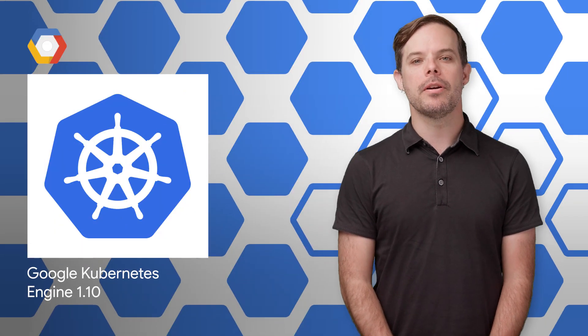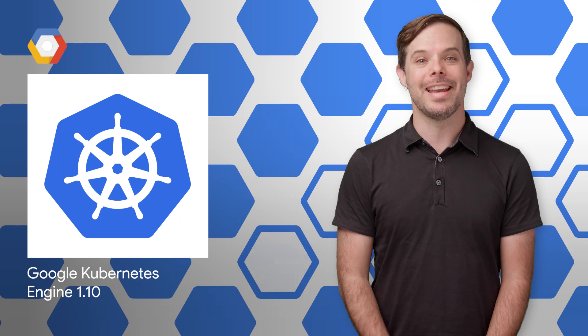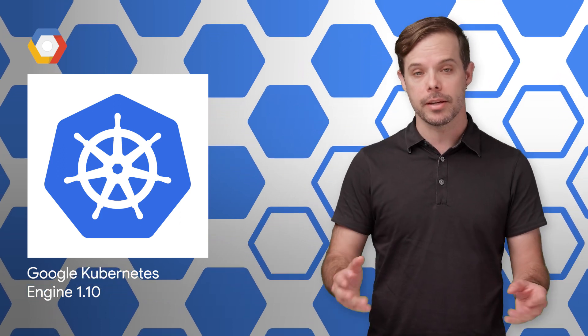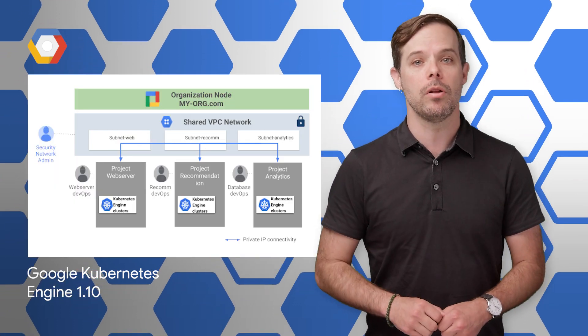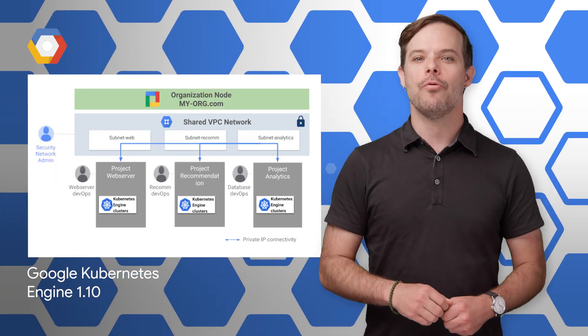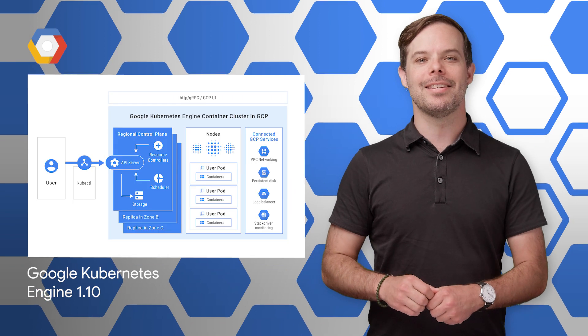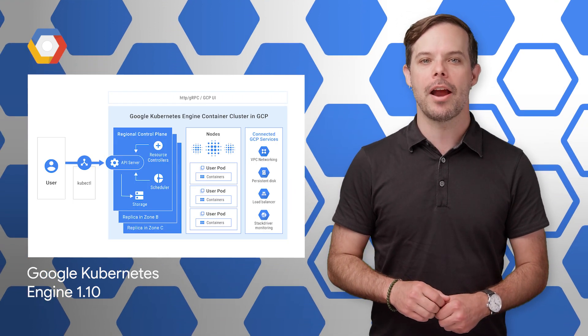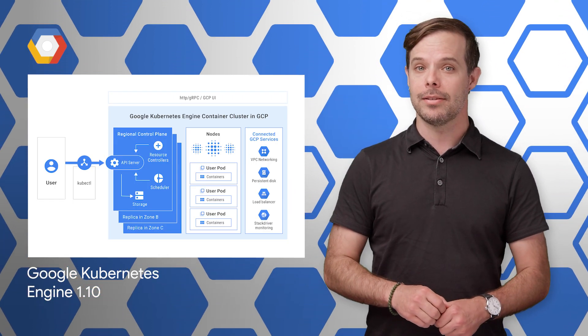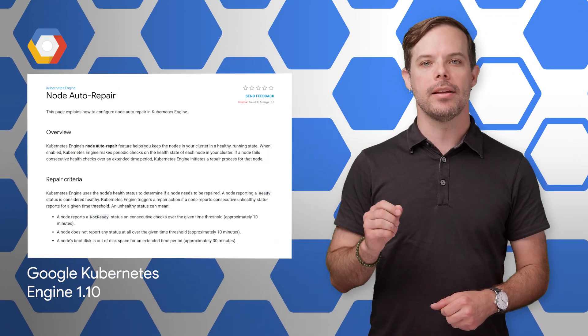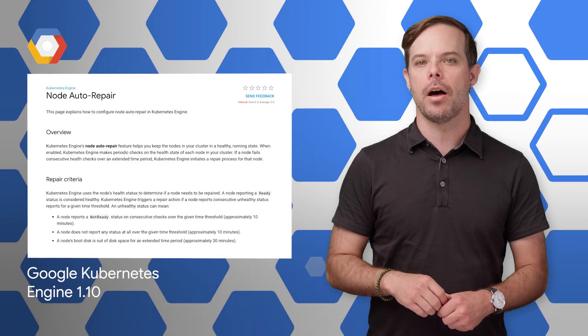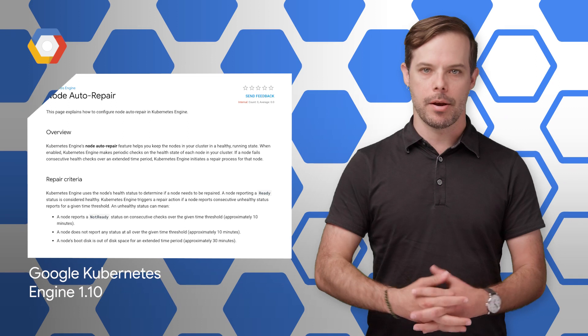Google Kubernetes Engine 1.10 is now generally available. Along with this, we are introducing new features to support enterprise use cases, including shared virtual private cloud for better control of your network resources, regional persistent disks and regional clusters for higher availability and stronger SLAs, and node auto repair GA and custom horizontal pod autoscaler for greater automation.